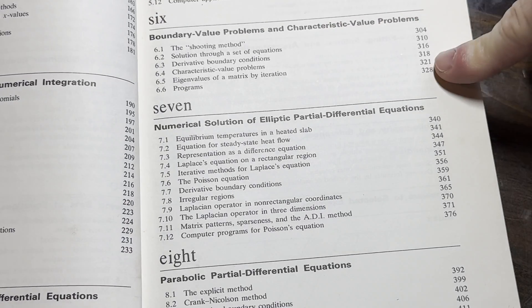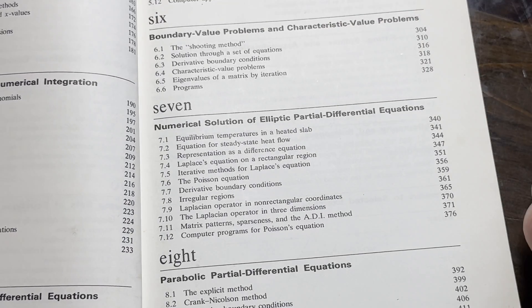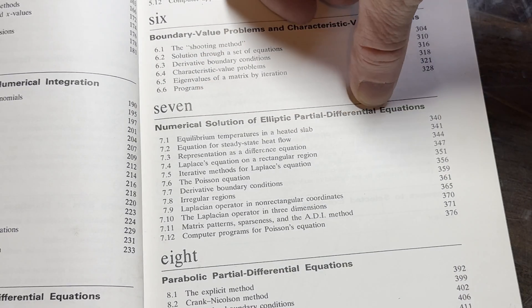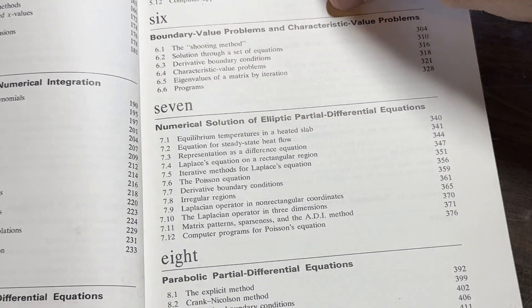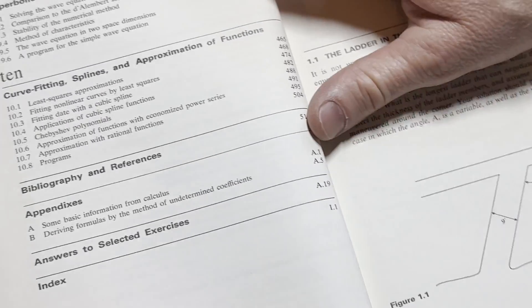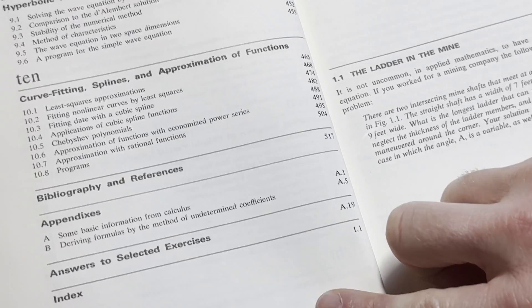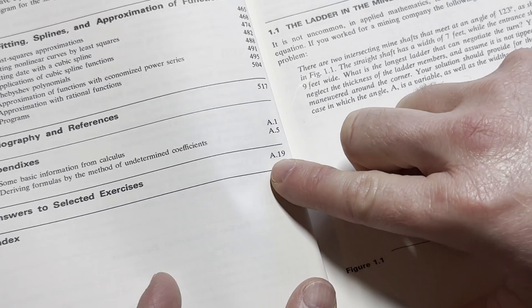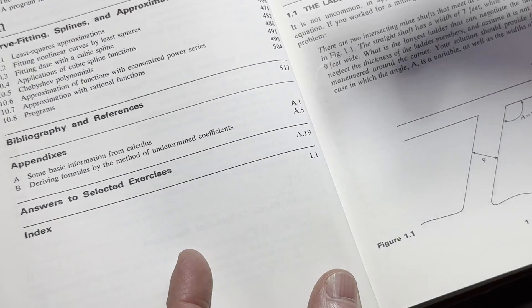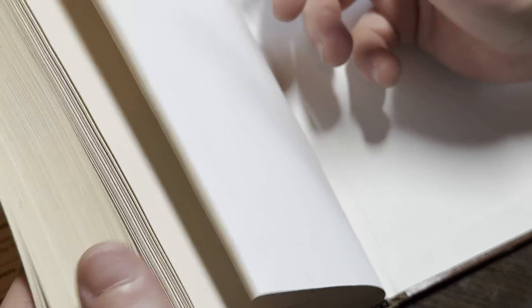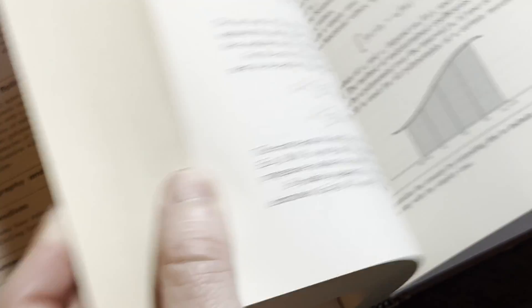And then here we have the numerical solution of ordinary differential equations, boundary value problems and characteristic value problems. Oh, this is cool. Numerical solution of elliptic partial differential equations and hyperbolic partial differential equations. Curve fitting and some other things. And then you have answers to some of the exercises in the back of the book. That's A19. Let's take a look at that so you see what that contains.